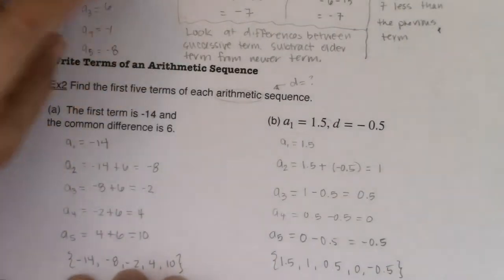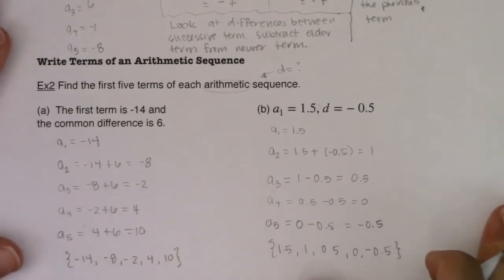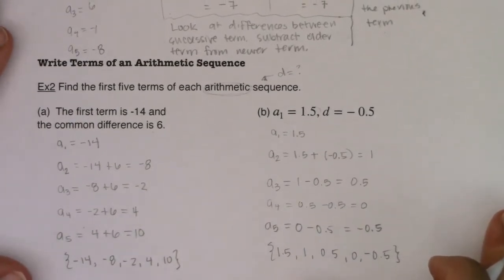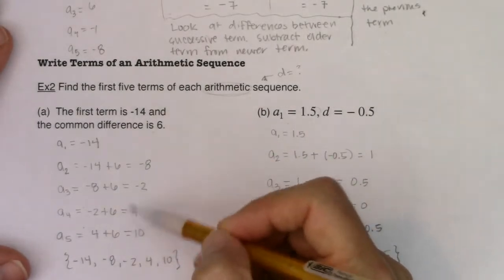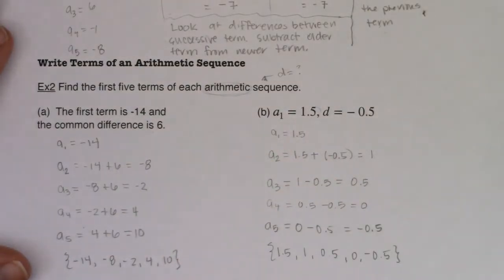And you can see that each time out, I'm just losing half a unit in this case. I was gaining six units in that case. So with that, we're going to flip the page and pick up our first major formula for arithmetic sequences.